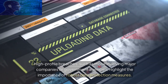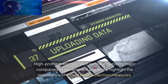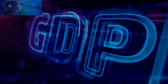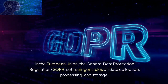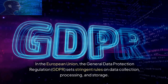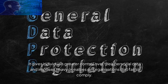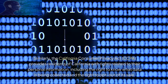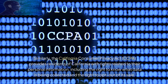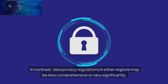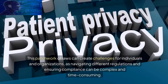Another challenge is the complexity of data privacy laws and regulations, which vary by country and region. In the European Union, the General Data Protection Regulation (GDPR) sets stringent rules on data collection, processing, and storage. It gives individuals greater control over their personal data and imposes heavy penalties on organizations that fail to comply. Similarly, the California Consumer Privacy Act gives residents of California rights related to their personal information, including the right to know what data is being collected and the right to opt-out of its sale. Data privacy regulations in other regions may be less comprehensive or vary significantly, creating challenges for individuals and organizations navigating compliance.